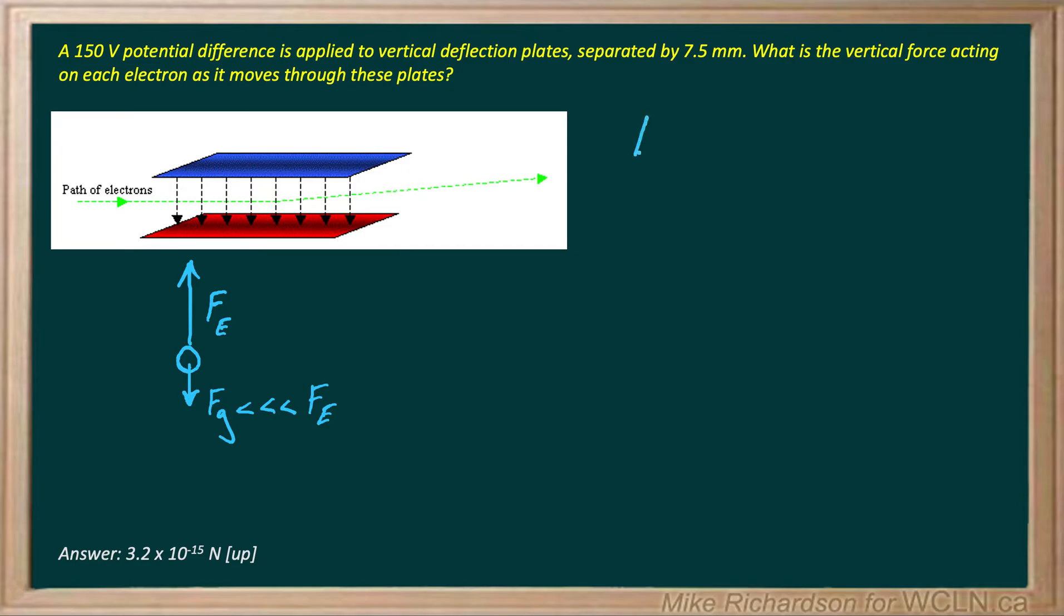Now we know earlier that electric field is defined as electric force per unit charge. So if I want to solve for force, it's going to be electric field times the charge of my electron. Now the electric field that occurs between parallel plates can be calculated by saying electric field is voltage across the plates divided by the distance between the plates. And they give you all of that information. So we're going to replace E with voltage across the plates divided by distance, and we'll leave the rest as is.